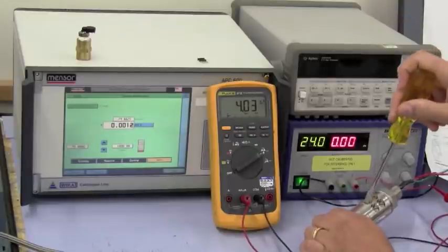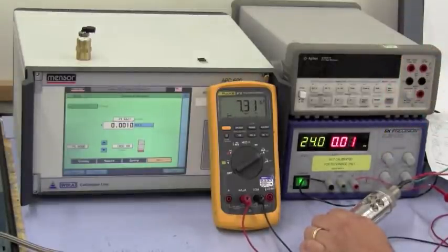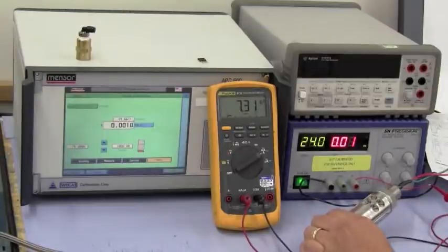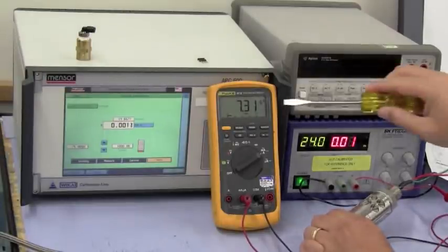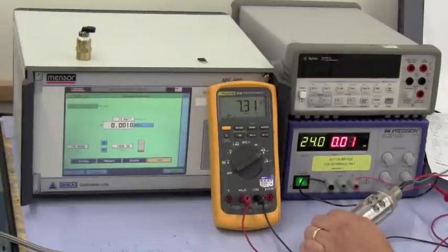We turn the CAL button on, in order to facilitate the simulation of pressure. And that's about 205 pounds. And you can see that my milliamps has gone from 4 milliamps at 0 to 7.31 milliamps, indicating simulated pressure.